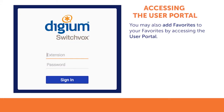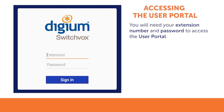You may add Favorites to your Favorites in your user portal. To access the user portal, you will need your extension number and password. If you do not have this information, contact your system administrator.